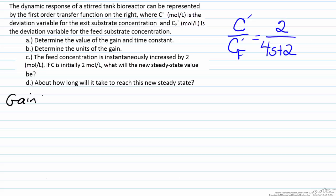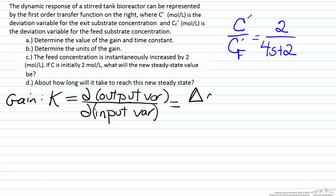The gain, which is often represented by K, can be defined as how a change in an input variable influences the change in an output variable. Here it is in its most generic form, which is in partial derivative form. However, many times this can be approximated as just the delta, just the change in the output variable divided by the change in the input variable.